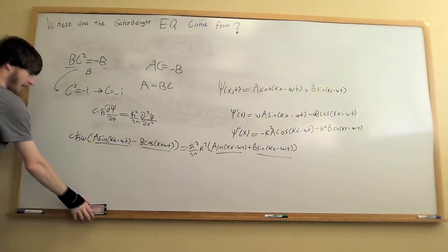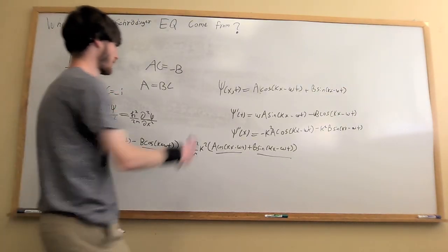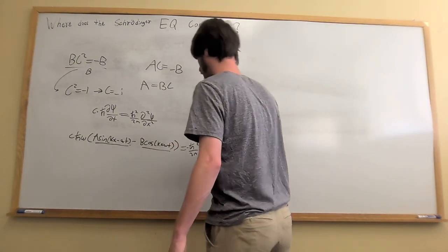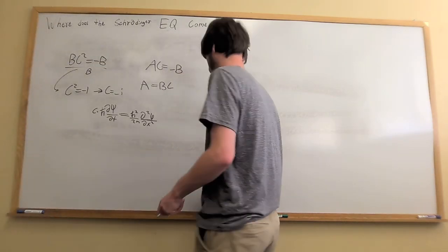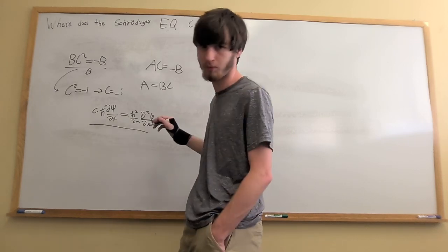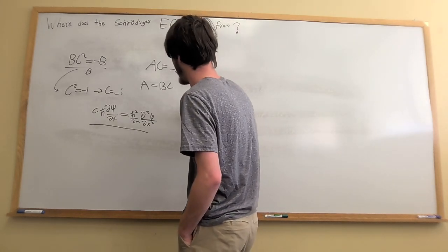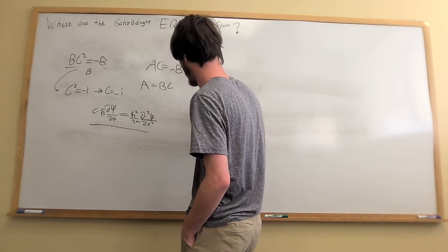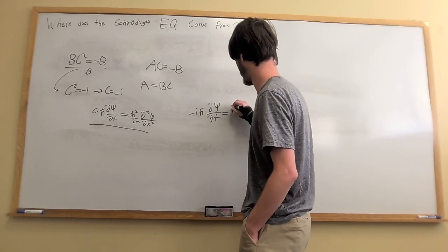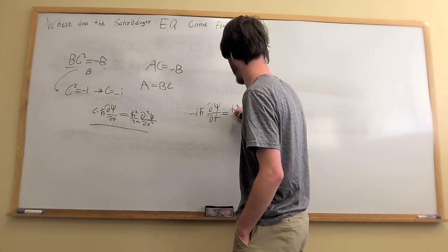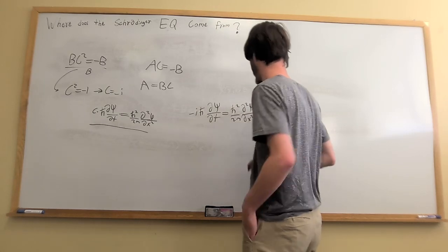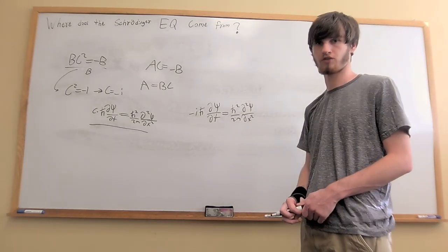Let's plug this back into our original wave function, or the Schrödinger equation, rather. You'll find that for a particle in free space, where there's no potential energy, we'll have minus i h bar partial psi partial t equals h bar squared over 2m partial squared psi partial x squared. And that's the Schrödinger equation. Thank you.